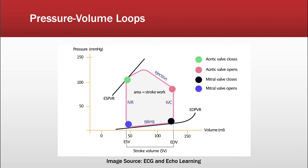On the screen now is a diagram of the pressure volume loop. This specifically represents the left ventricular pressure volume relationship.